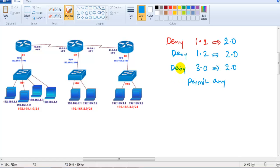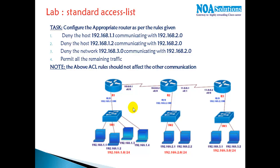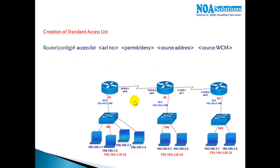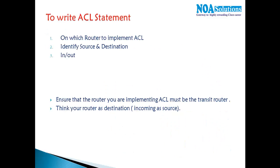We need to implement this using standard ACLs, since we are not filtering based on any services. The syntax is: access-list [ACL number] permit/deny [source address] [source wildcard mask]. But before getting into the syntax, there are three important things to decide, and if you understand these three things you can write ACL rules for any given scenario.